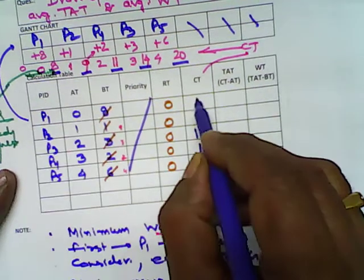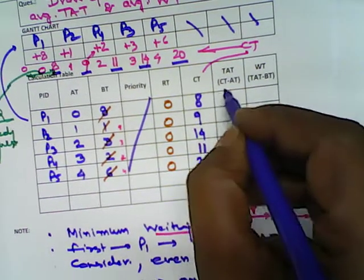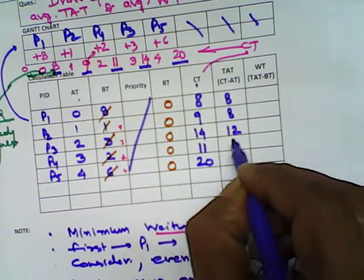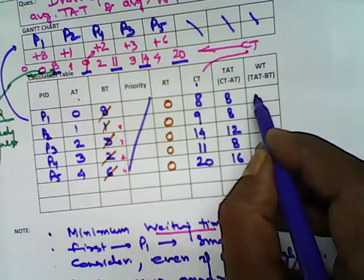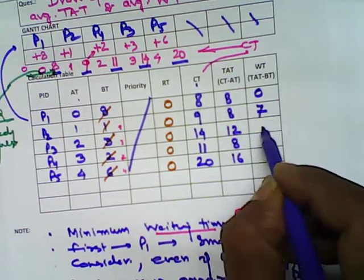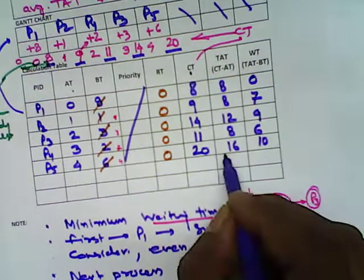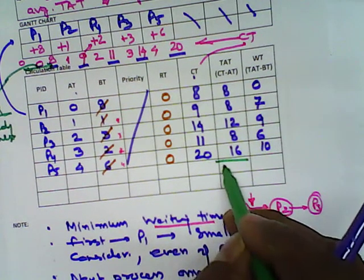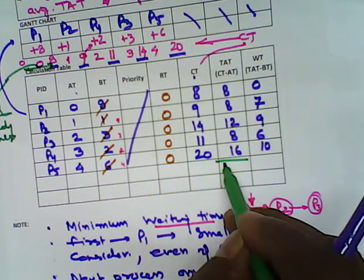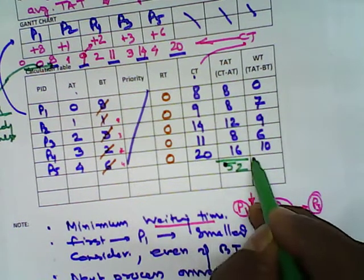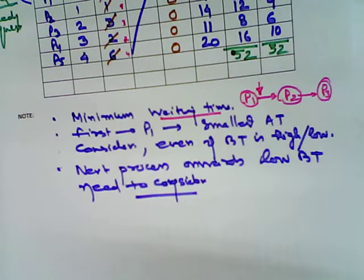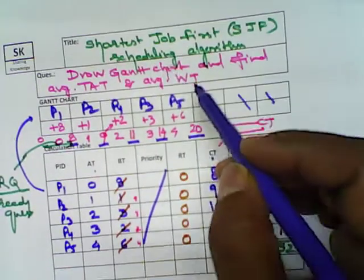Then it is simple. TAT is nothing but CT minus AT. So here you will get 8, 8, 12, 8 and 16. And what is waiting time? 0, 7, 9, 6, 10. So you sum up everything. When you sum up, here it will become totally it comes around 52, and this one comes around as 32. Now we go to the bottom. Our Gantt chart we have completed. Now we have to find turnaround time and waiting time.